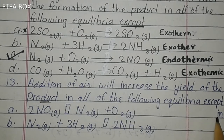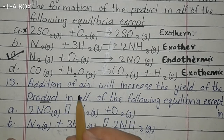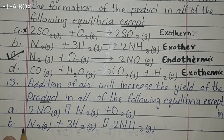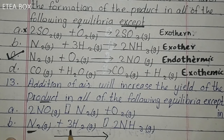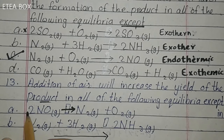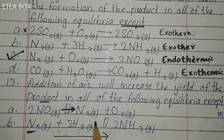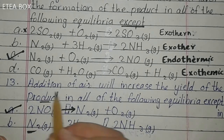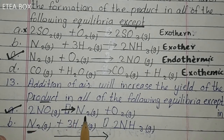Addition of air will increase the yield of product in all of the following except. Adding air means adding N₂, O₂ and other gases. For option B, adding air increases N₂ which reacts with H₂ to give more NH₃ — forward direction. For option A, the reaction is 2NO ⇌ N₂ + O₂; adding air means adding N₂ and O₂ which are the products — reaction shifts backward, increasing reactants not products. This is the exception. Option A is correct.